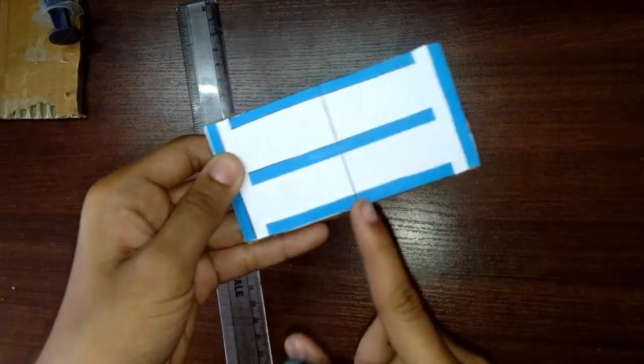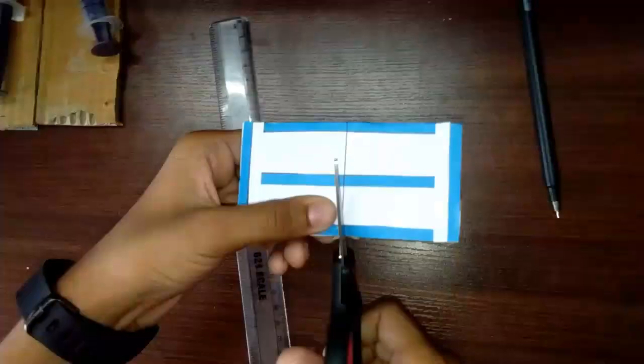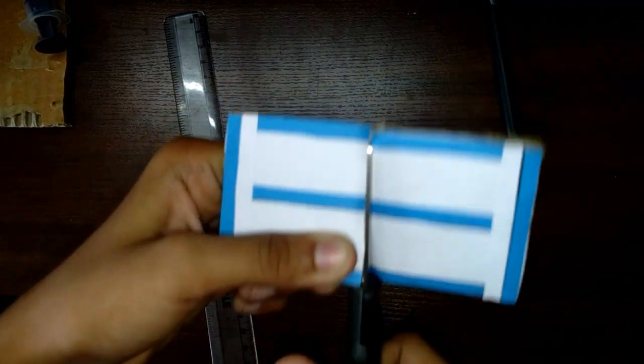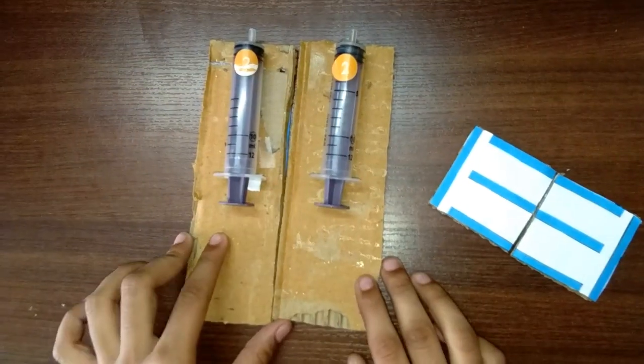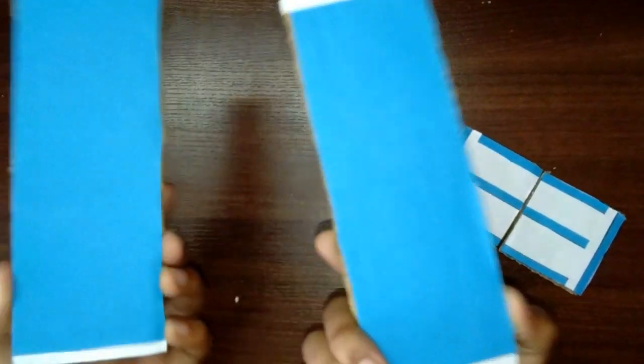Now for 5 centimeters, cut this one. I am using thick cardboard so that it can hold. Now I have pasted both the syringes to these cardboards in this way.